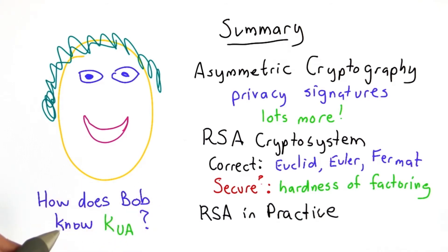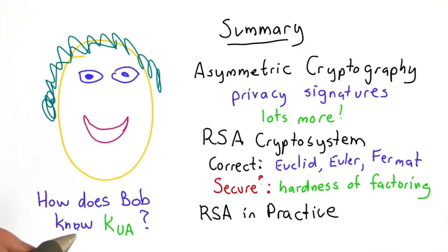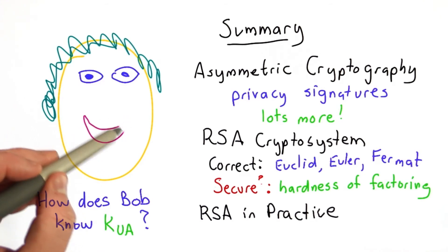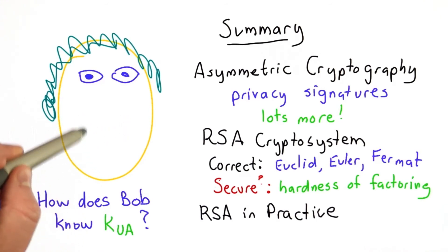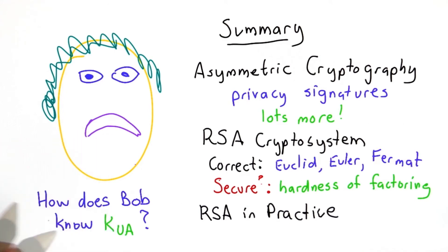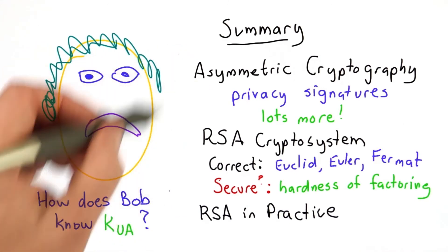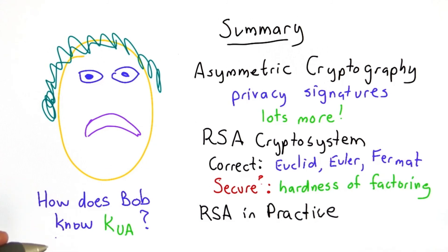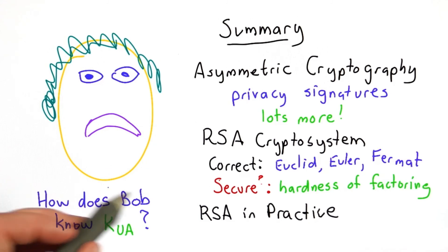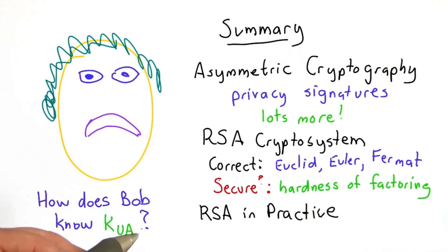There's one issue that we haven't covered yet, and that's how does Bob actually know Alice's public key? If they can get together in a room, maybe she could give it to him, but that's not usually possible. So this is a hard problem, and until we have a solution for that, we're going to have to take away Bob's smiley face — and he's still a little bit frowny. Until we have a solution to this problem, we don't have a good way to use asymmetric cryptography in practice, because it relies on being able to get all these public keys.